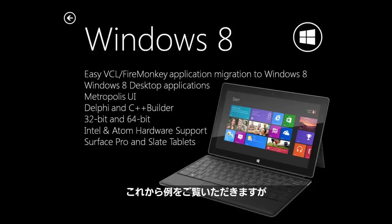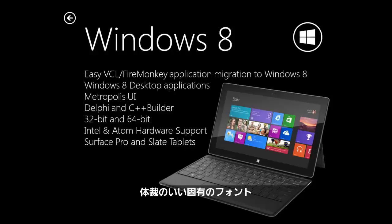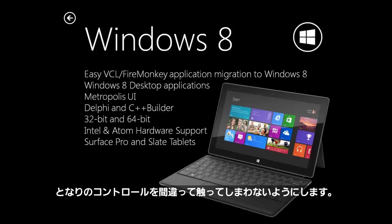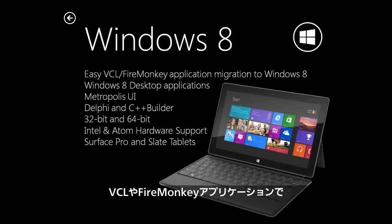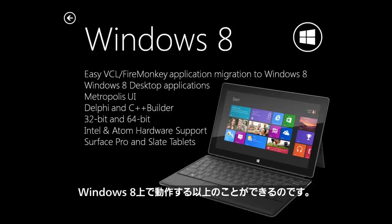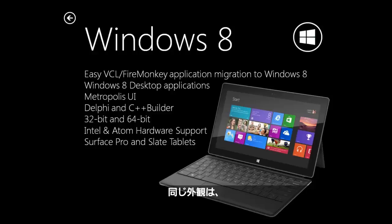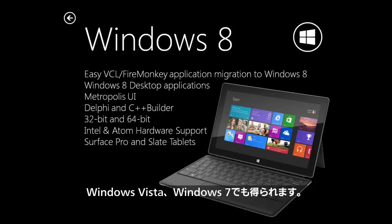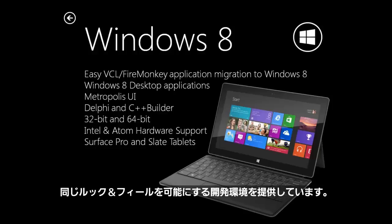The Windows 8 style features bigger blocks, a specific nice-looking font, and bigger buttons and checkboxes so that on a touch screen you can touch a control without hitting the one next to it. You don't have to do anything special in your VCL and FireMonkey applications other than choose a style — then you can have the Windows 8 look and feel on Windows XP, Vista, and Windows 7. We're the only development company to give you that look and feel across all supported versions of Windows.